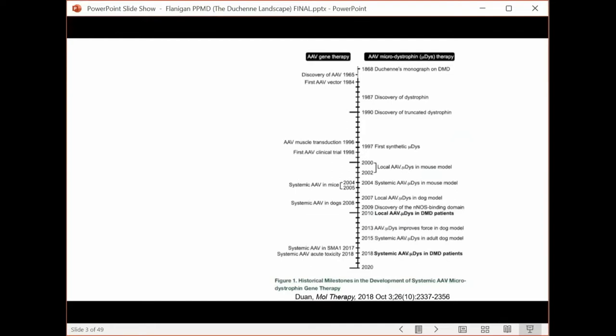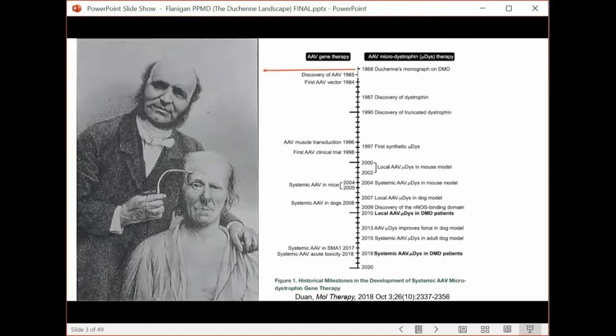I want to frame my talk in terms of this timeline, which I borrowed, or more candidly I guess I stole from my friend and colleague, Deng Shen Duan. He published it in a review regarding the development of AAV gene therapies. But it's a nice framework for thinking about Duchenne dystrophy in general, beginning of course with Dr. Duchenne himself.